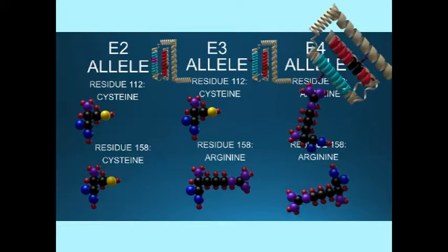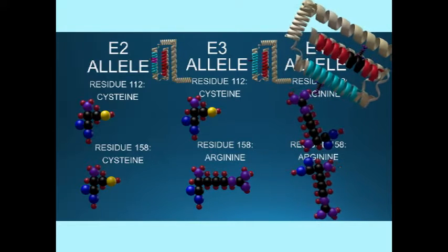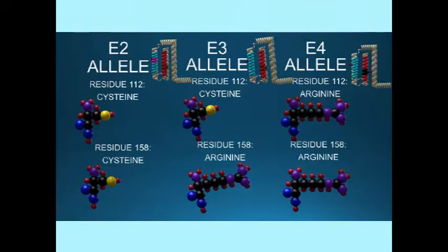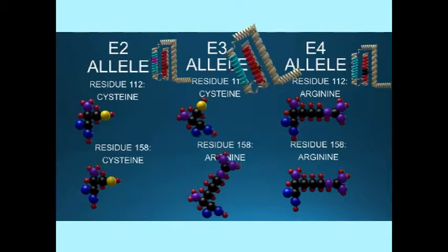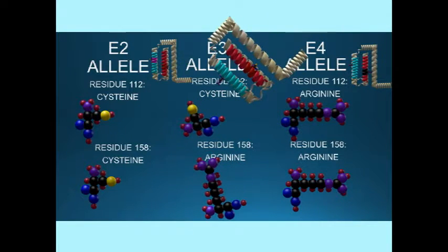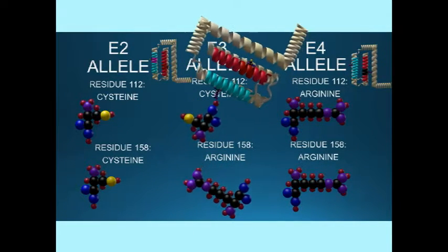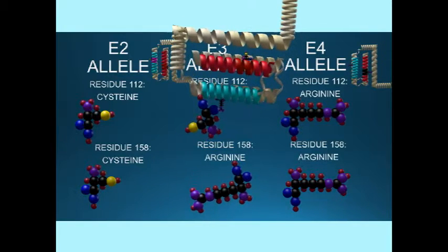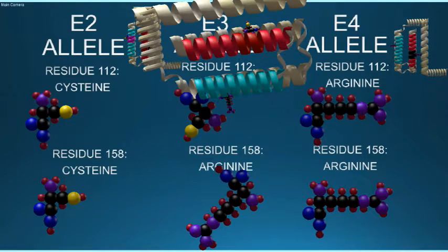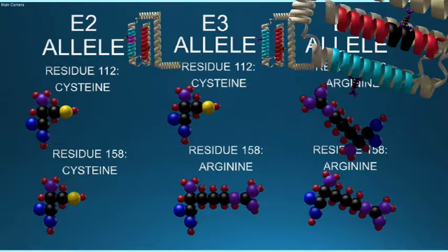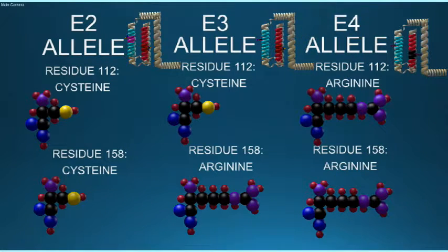The E3 allele is the most common, being found in about 80% of people, although this varies within populations from around 40% to 90% within a certain segment of society. The E2 allele represents around 7%, and the E4 allele around 14%.